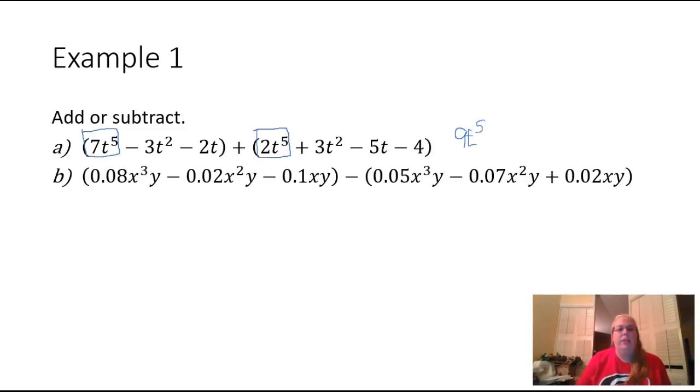Next thing I'm looking for is my next term, a three t squared, and it is negative. I'm looking back here and I have a three t squared which is positive. So when I add negative three plus a positive three, that's going to give me zero. So these are actually going to cancel one another out.